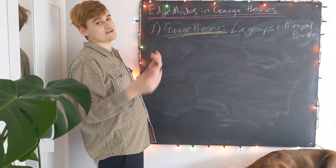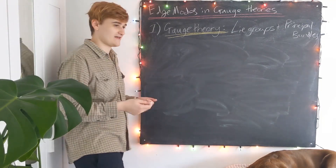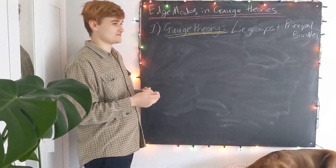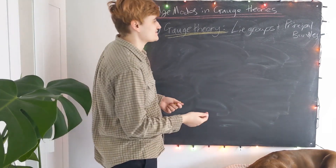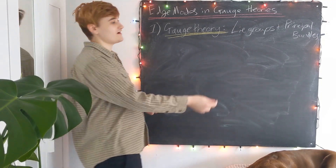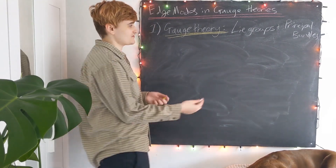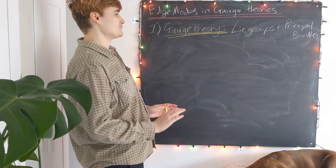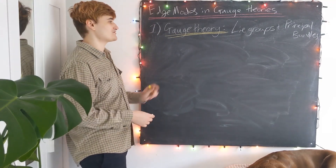A Lie group is essentially the continuous generalization of a group. Usually we think of a group as just being a set of discrete elements that satisfy the group axioms, whereas a Lie group is a continuous set that can be parameterized by a continuous parameter. This also means that it can be described as a smooth manifold, which makes a lot of constructions in differential geometry really nice, and we can use all the features of group theory — this all ties deeply into symmetry. As for principal bundles, I'm not going to be able to explain what they are without leaning heavily on the mathematics, so I'll leave them abstract for now.